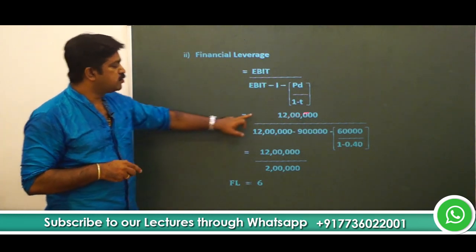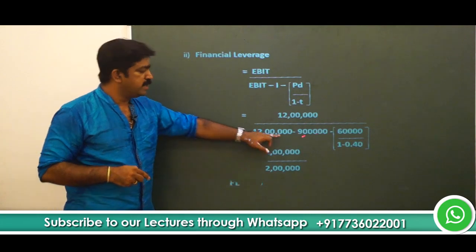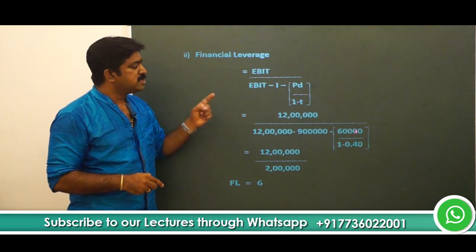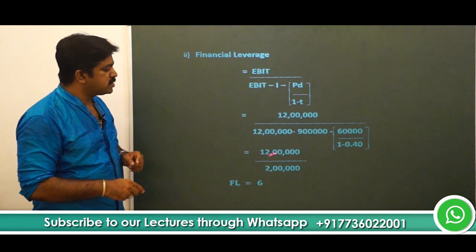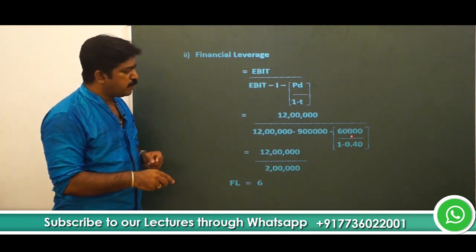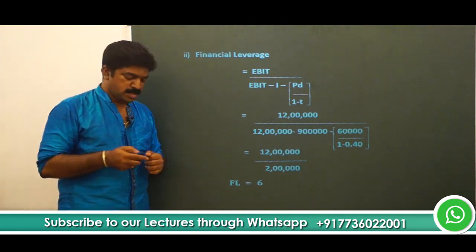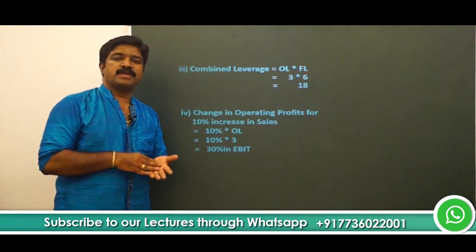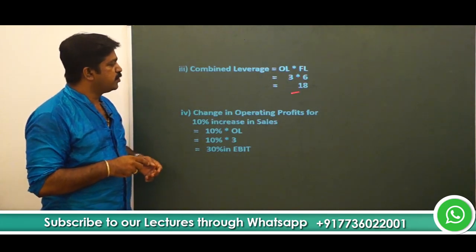EBIT in the numerator is 12 lakhs. In the denominator: EBIT 12 lakhs minus interest 9 lakhs equals 3 lakhs, then minus 60,000 ÷ 0.6 which is 1 lakh, giving 2 lakhs. So financial leverage is 12 lakhs divided by 2 lakhs, which equals 6. Next, combined leverage is simply operating leverage multiplied by financial leverage: 3 times 6 equals 18.